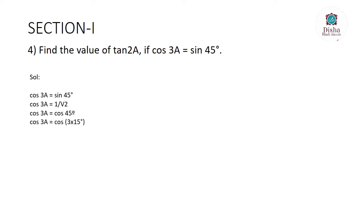Since cos 3a = cos 45°, we can write cos 45° as cos(3 × 15°). So cos 3a = cos(3 × 15°), which gives a = 15°. Now tan 2a = tan(2 × 15°) = tan 30°, and the value of tan 30° = 1/√3. Let's move on to the next question.